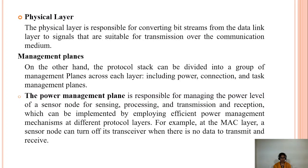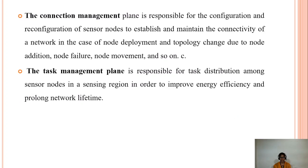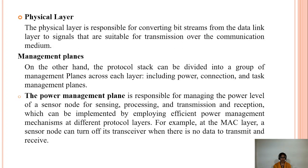There are three management planes: power management plane, connection management plane, and task management plane. The power management plane manages the power level of sensor nodes for processing, transmission, sensing, and reception, implemented through efficient power management mechanisms such as the MAC layer, where a sensor node can turn off when there is no data to transmit or receive. The connection management plane is responsible for configuration and reconfiguration of sensor nodes to establish and maintain network connectivity in cases of node deployment, topology change due to node addition, failure, or movement. The task management plane is responsible for task distribution among sensor nodes in a sensing region to improve energy efficiency and prolong network lifetime.